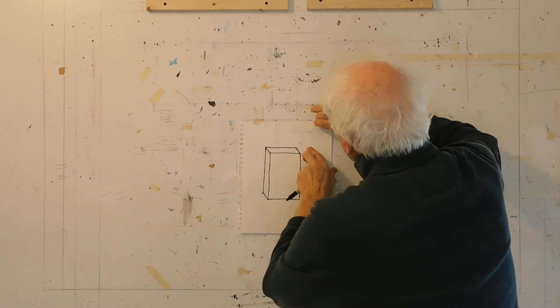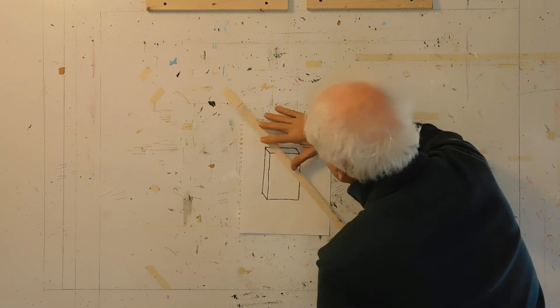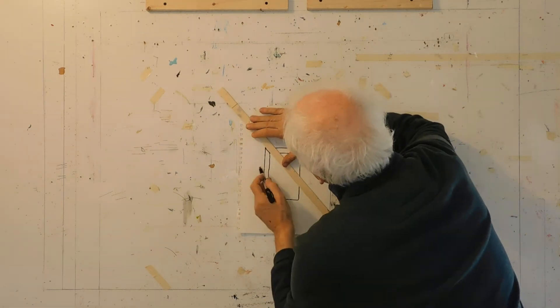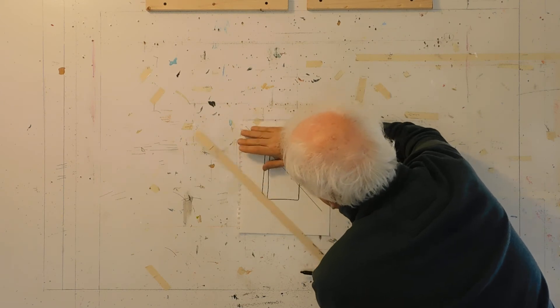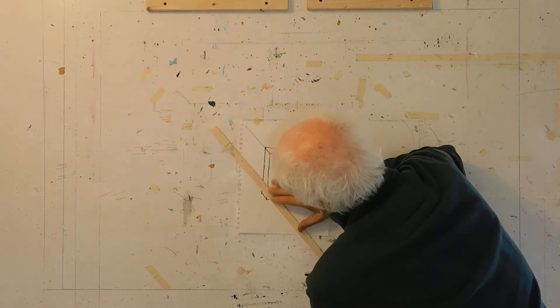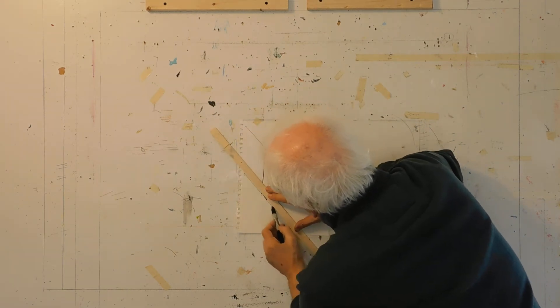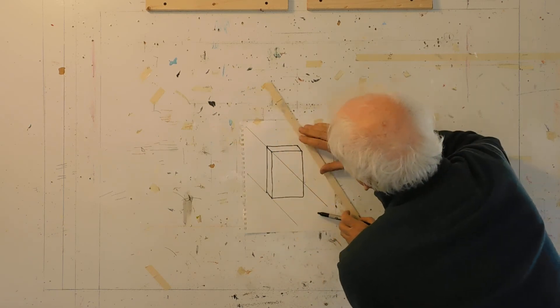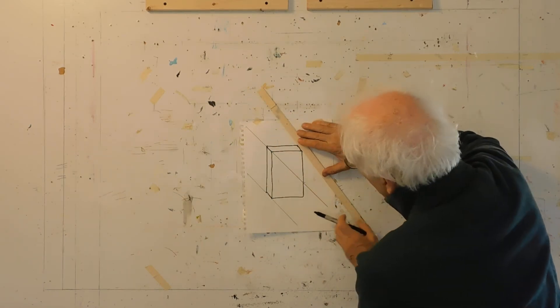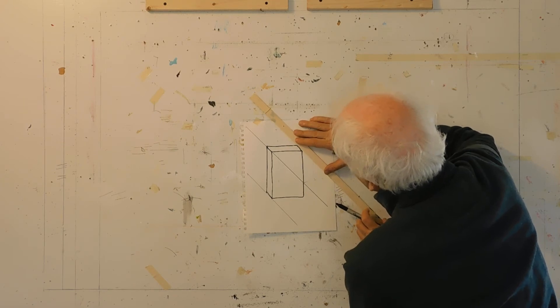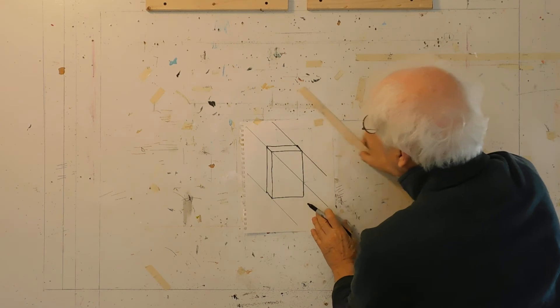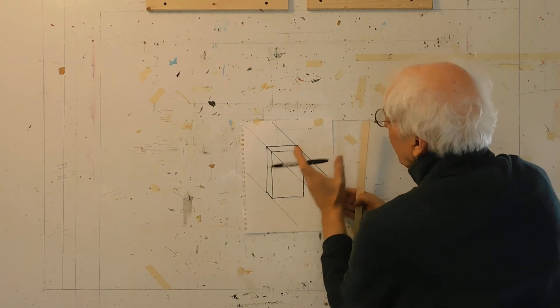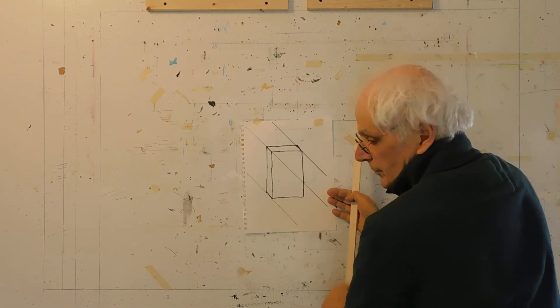Here, my diagonals are almost parallel. If I'm off a little bit, it should really be like that. Now my diagonals are parallel, like train tracks. Now, next.